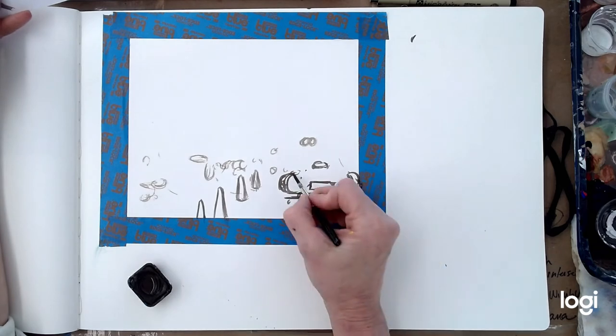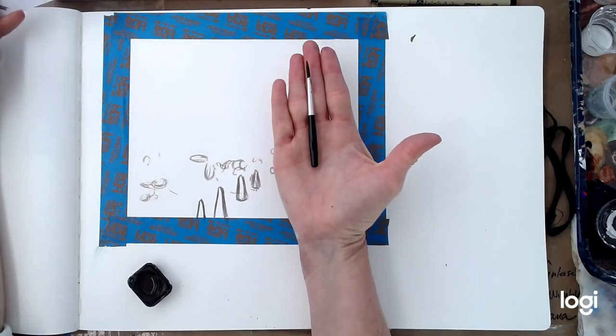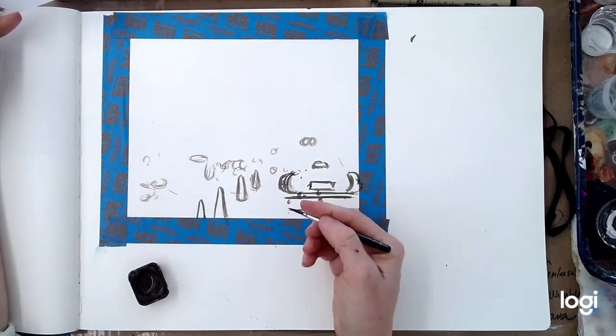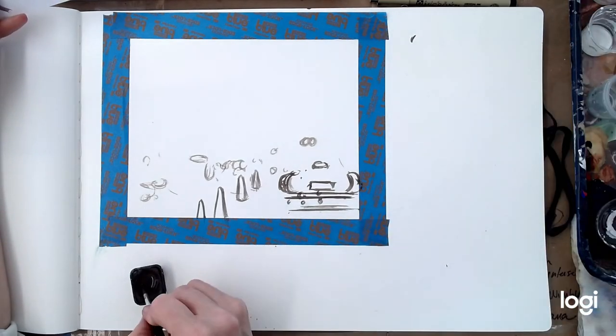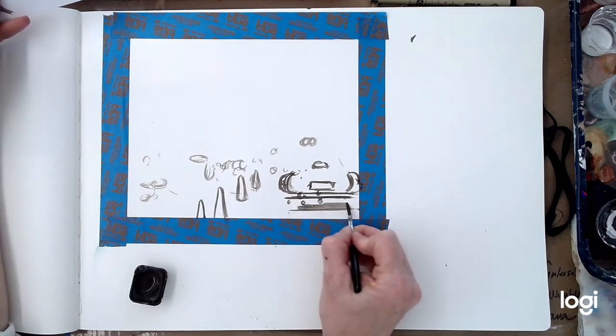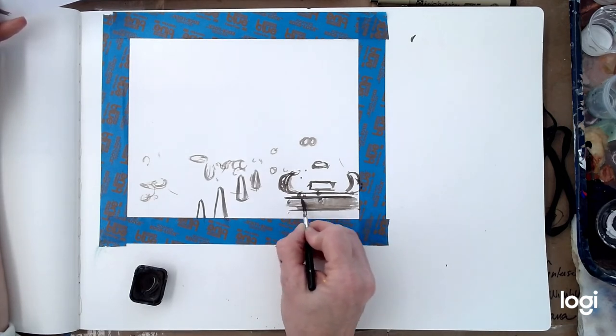A couple people have asked me about this little tiny brush that I'm using. This is my Da Vinci travel brush and I know it's silly that I'm using it here in the studio like this, but I love this brush. A friend of mine bought it for me in Paris and it's just so great for everything that I use it all the time, even though I don't really need to be using this brush. I have lots of full-size brushes.